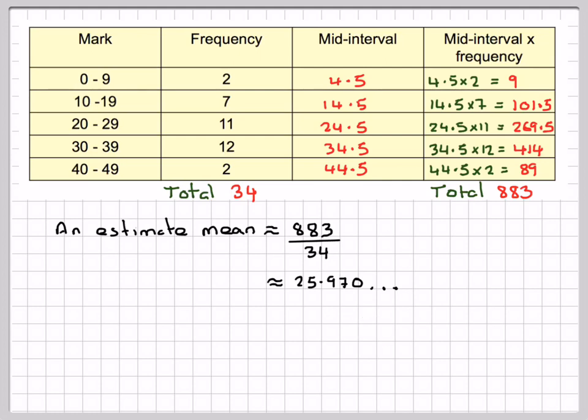We round to 3 significant figures. The 7 will make the 9 round up to 10, making it 26. So the answer is 26.0 to 3 significant figures.